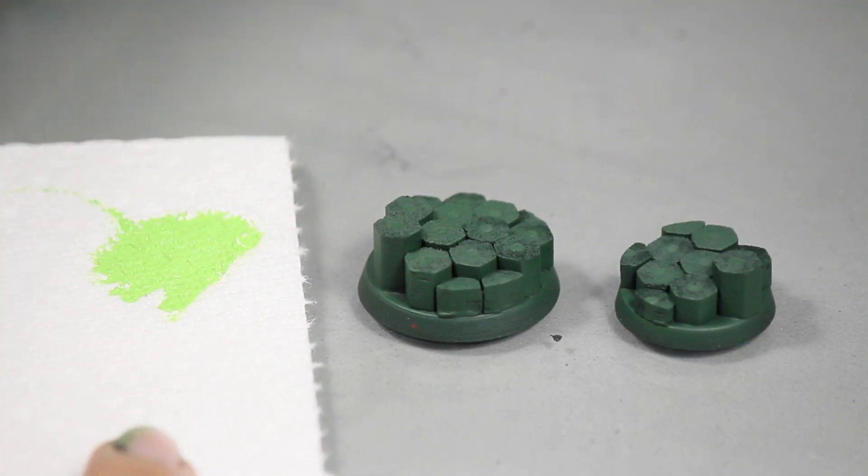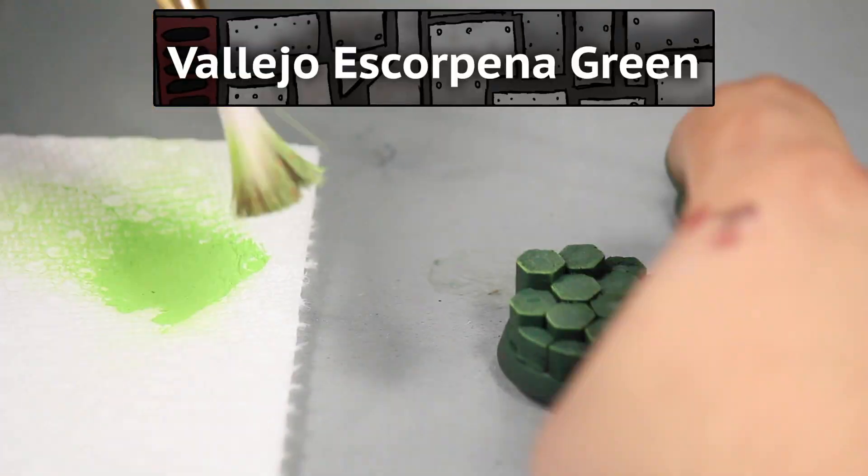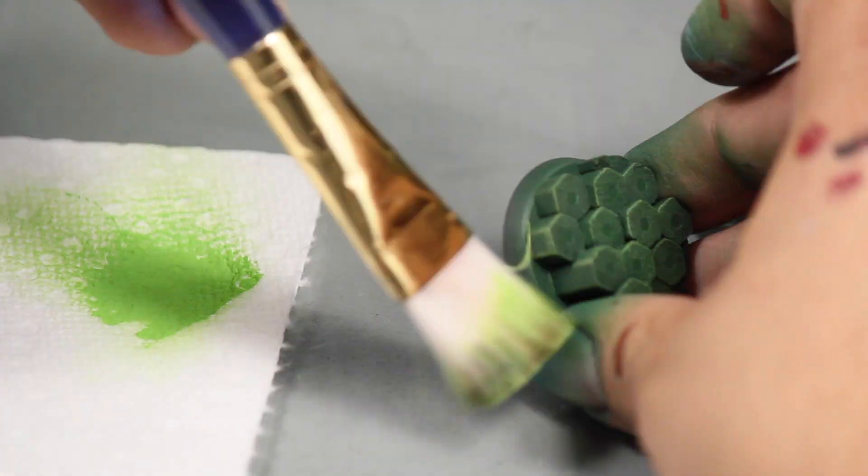Then I gave the bases a big dry brushing with some Vallejo Escorpina Green to bring out all the edges and shapes of the rocks.